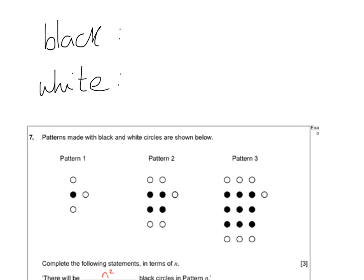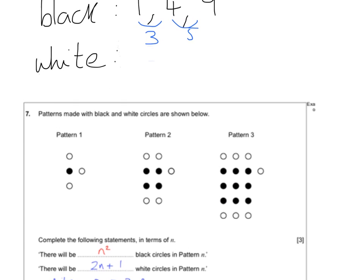Question 7 — some people spot these patterns really quickly. Looking at the black squares: 1, then 4, then 9 — the shape is always making a square, so they are the square numbers. If needs be, write out the numbers 1, 4, 9 and hopefully you will spot that pattern. Some people would go one step further and find the difference: it goes up by 3, then 5, and the second difference is constant. The nth term for the black squares is n².